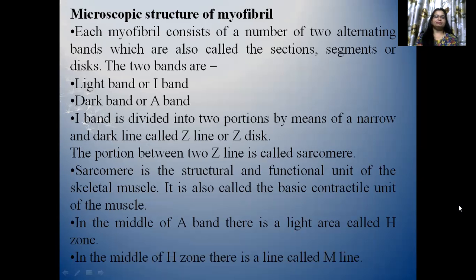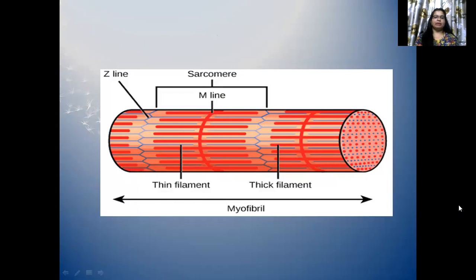Microscopic structure of myofibril: each myofibril consists of a number of two alternating bands, also called sections, segments or discs. The two bands are the light band or I band and the dark band or A band. The I band is divided into two portions by means of a narrow dark line called Z-line or Z-disc. The portion between two Z-lines is called sarcomere. Sarcomere is the structural and functional unit of the skeletal muscle, also called the basic contractile unit of the muscle. In the middle of the A band, there is a light area called H-zone. In the middle of the H-zone, there is a line called M-line. There is a diagram showing myofibril with Z-line, M-line, thin filament, thick filament, and sarcomere.